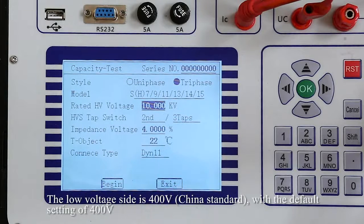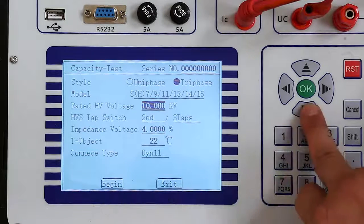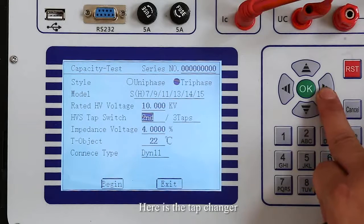The low-voltage side is 400V with the default setting of 400V. Here is the tap changer.